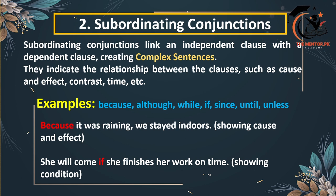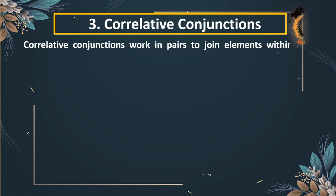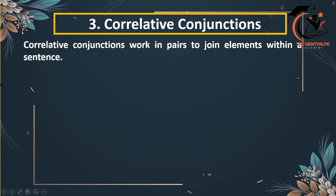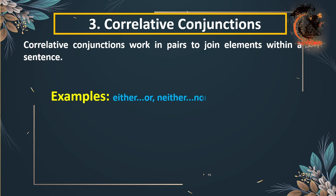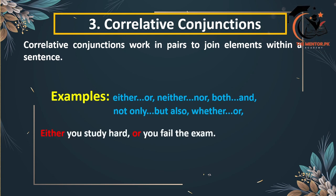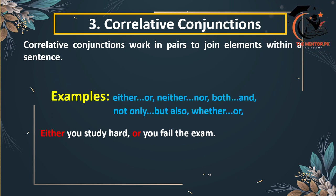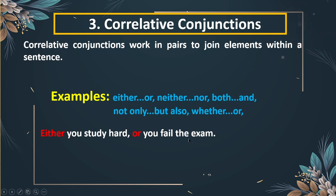The third type is correlative conjunctions. These conjunctions work in pairs to join elements within a sentence. The most common correlative conjunctions are: either...or, neither...nor, both...and, not only...but also, and whether...or. For example: 'Either you study hard or you will fail the exam.' We always see these two words in a pair — studying hard is linked to passing or failing the exam.